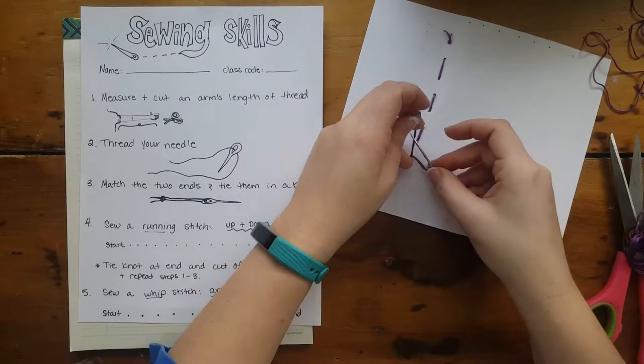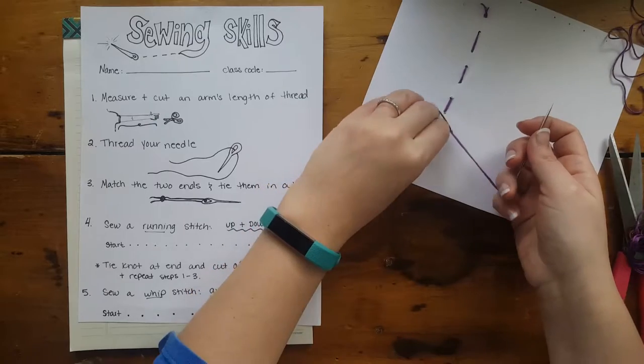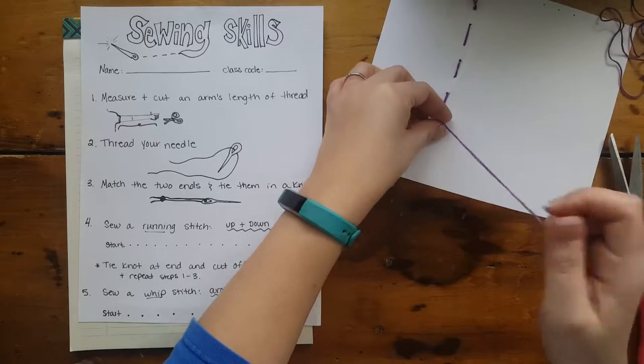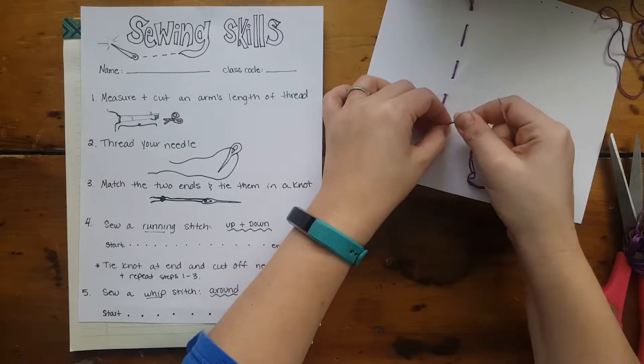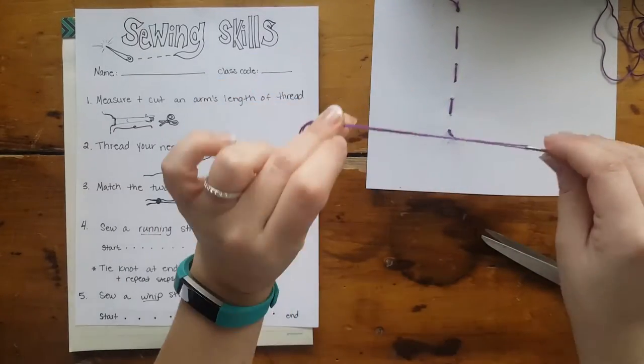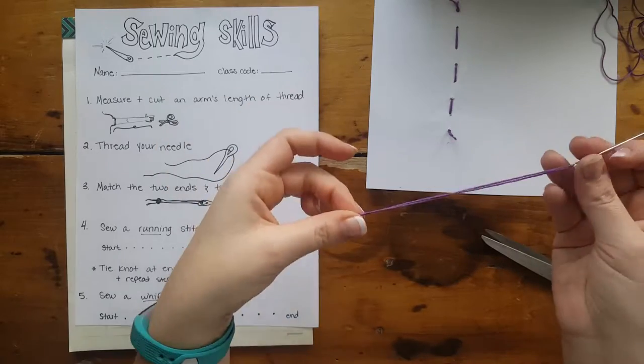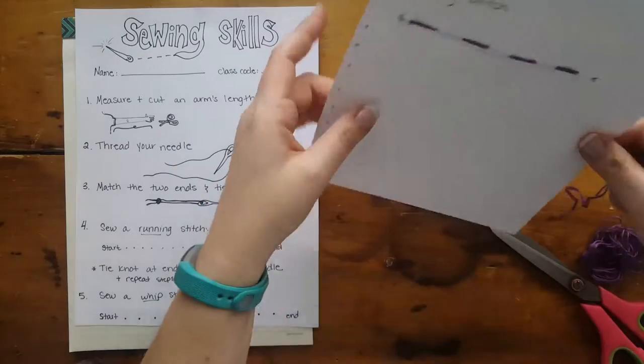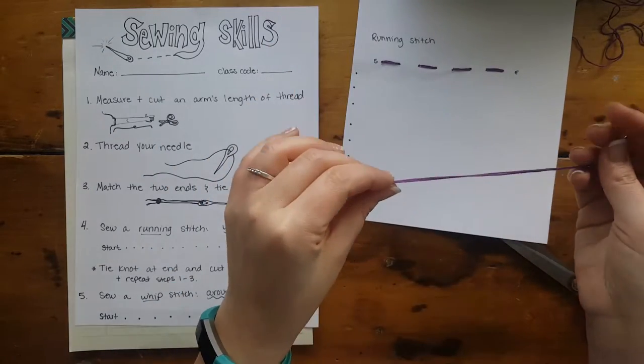I'm going to tie a knot, which means I put my needle through the hole, use my fingers to scrunch it down towards the bottom, and cut it off. If you have enough thread, you'll be able to continue sewing. If you don't, then repeat steps one through three.